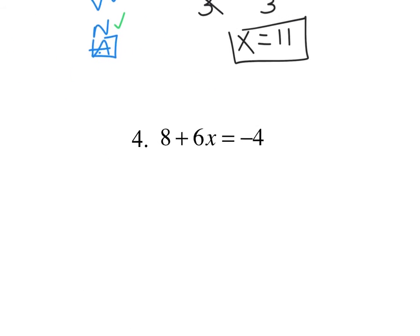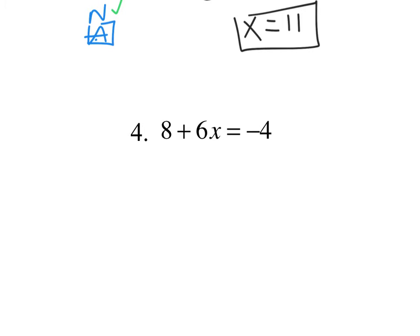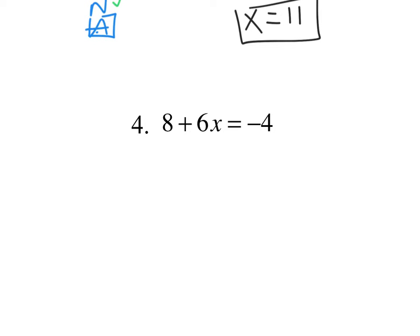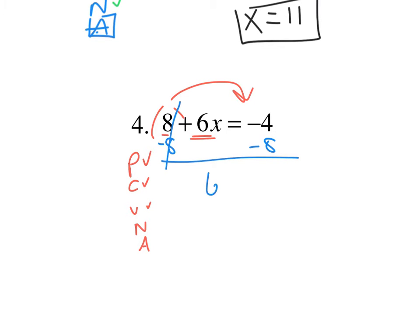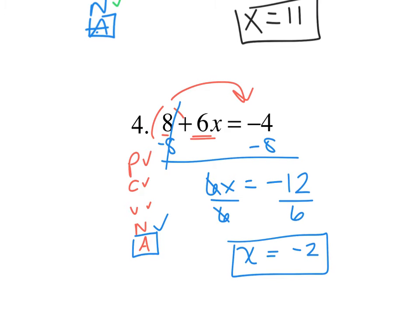Now try to do this one by yourself as well. PCVNA. Do I have parentheses? Nope. Can I combine my 8 and my 6x? Nope. Are all my x's on the left-hand side? Yes. Did I move my numbers to the right-hand side? Nope. So I subtract 8 from both sides. My 8s cancel. So I get 6x equals negative 4 minus 8. Negative 4 plus a negative 8 is negative 12. Then I get rid of this 6 by dividing. So I get x equals negative 2. And that's your final answer.